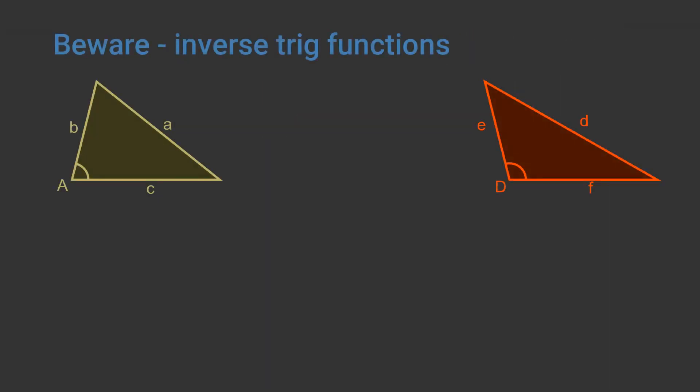So we have just proved that cosine D equals cosine A. Does this mean that the angles are definitely equal? Not quite, because the inverse cosine is not unique. For example, the cosine of 60 degrees is 0.5, but the cosine of 120 degrees is also 0.5. So if we try to find the inverse cosine of 0.5, the answer could be 60 or 120. In fact, for any angle P, the cosine of P is equal to the cosine of 180 minus P.